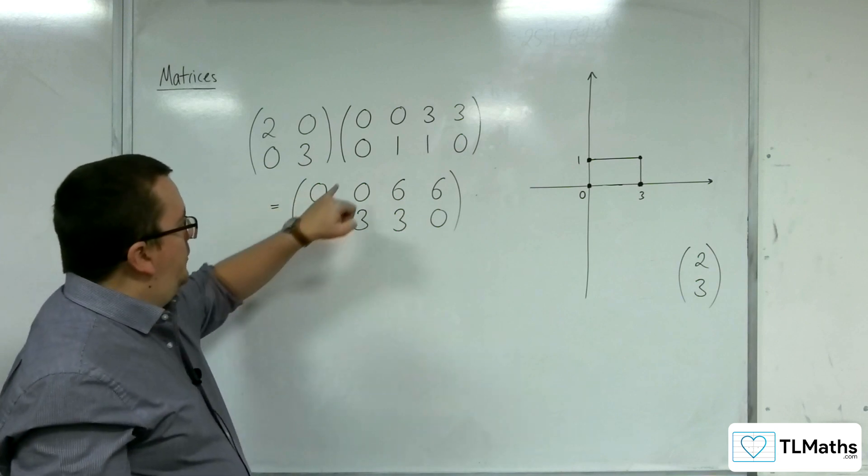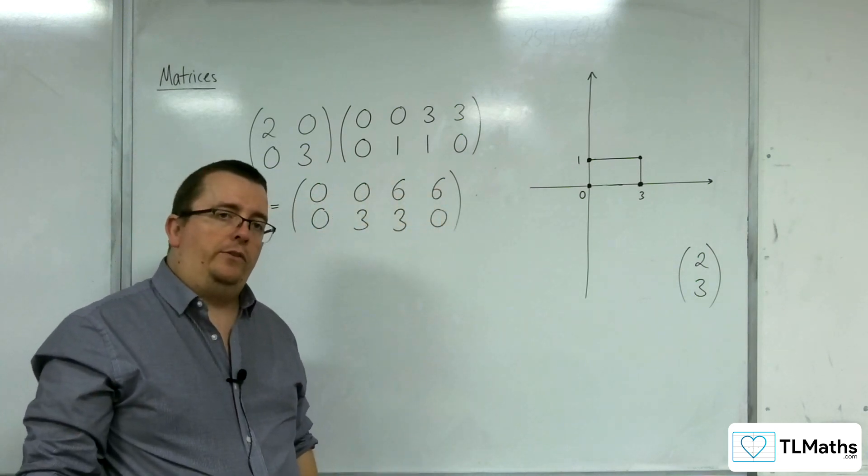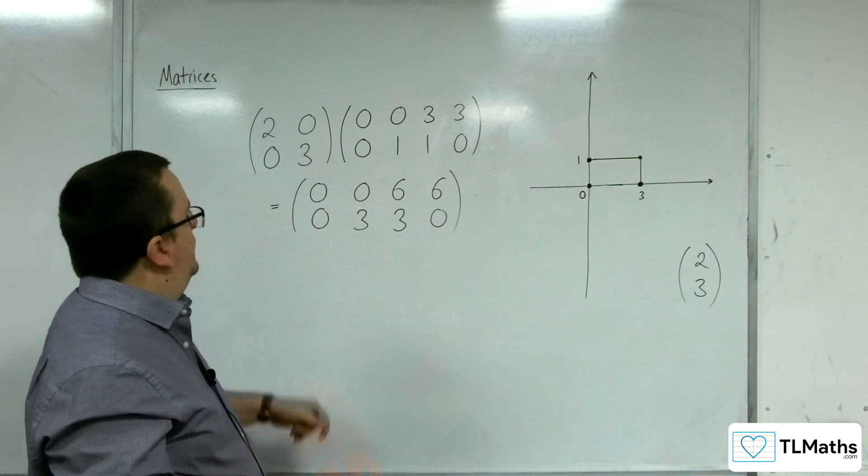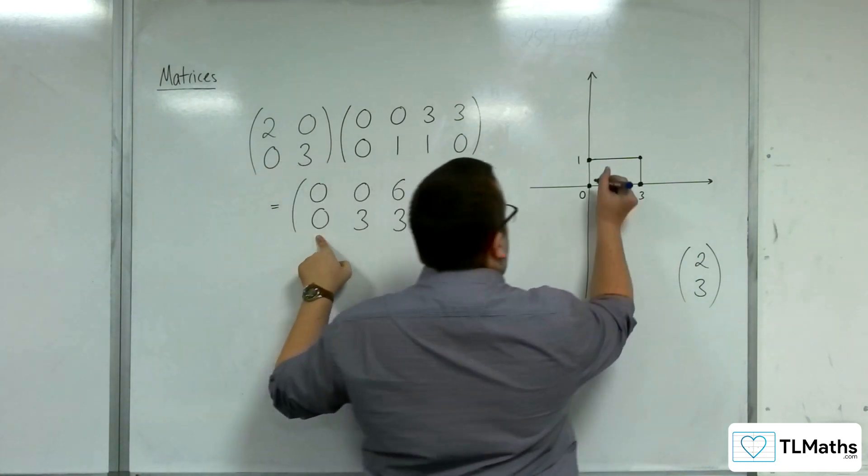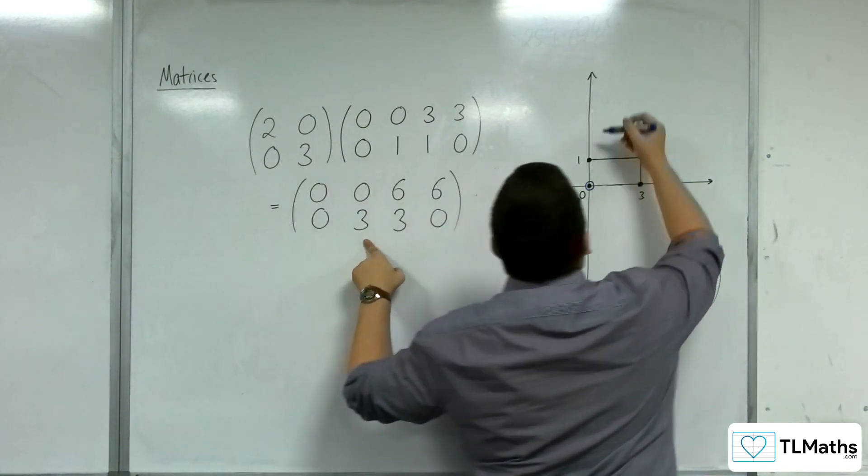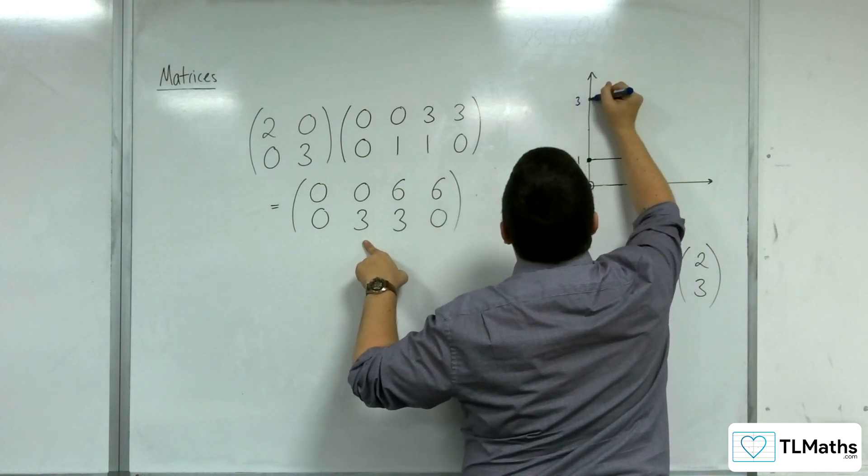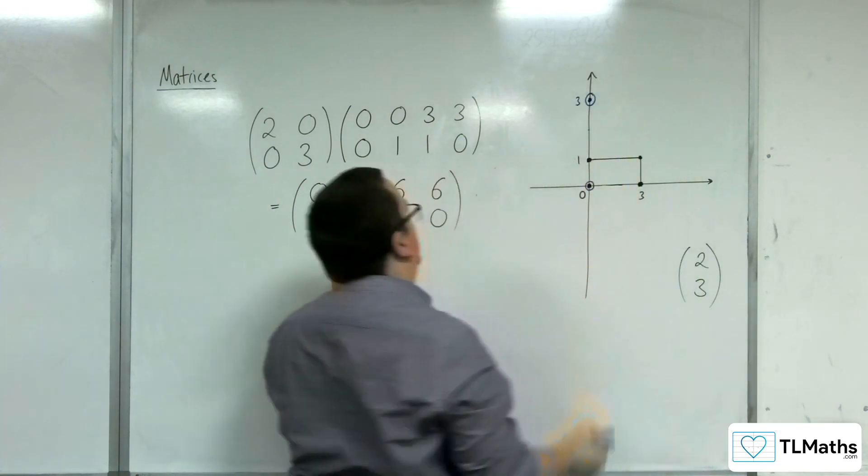So I have another matrix now. And these can now represent a new set of coordinates. So let's plot them. So we have the 0, 0. So that one there. 0, 3. So that would be, 3 would be up here.